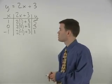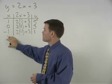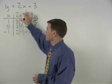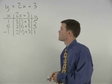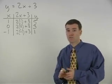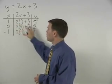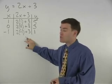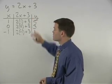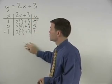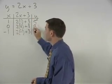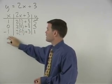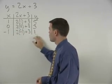I would always choose at least 3 values to plug into the equation for x. Notice that we now have 3 points that we can use to graph this equation. Our points are (1, 5), (0, 3), and (negative 1, 1).